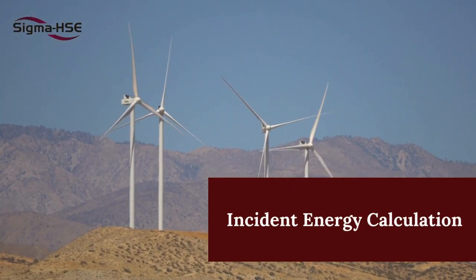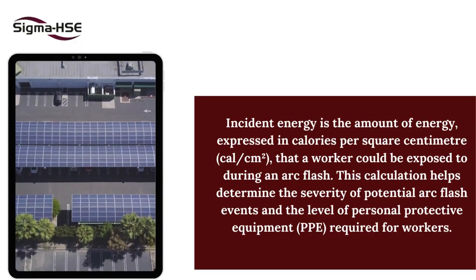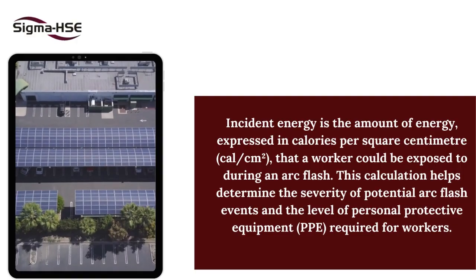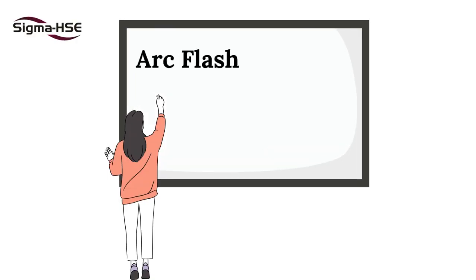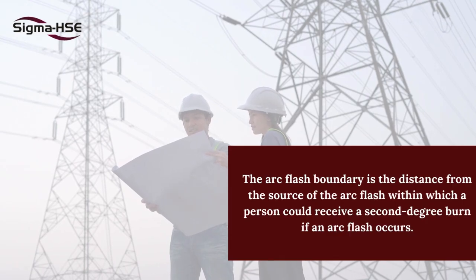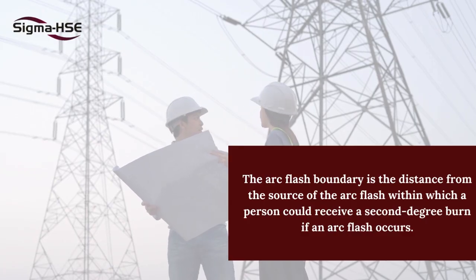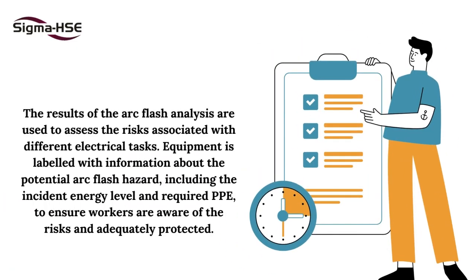Incident Energy Calculation: Incident energy is the amount of energy, expressed in calories per square centimeter, that a worker could be exposed to during an arc flash. Arc Flash Boundary Determination: The arc flash boundary is the distance from the source of the arc flash within which a person could receive a second-degree burn if an arc flash occurs. Risk Assessment and Labeling: The results of the arc flash analysis are used to assess the risks associated with different electrical tasks.